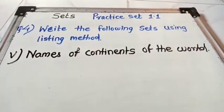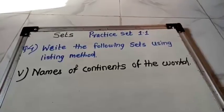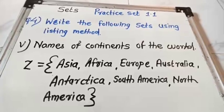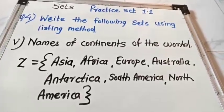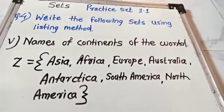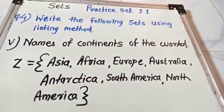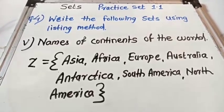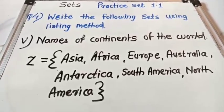Next example: names of continents of the world. The answer is Z = {Asia, Africa, Europe, Australia, Antarctica, South America, North America}. Everyone understood how to write using the listing method?